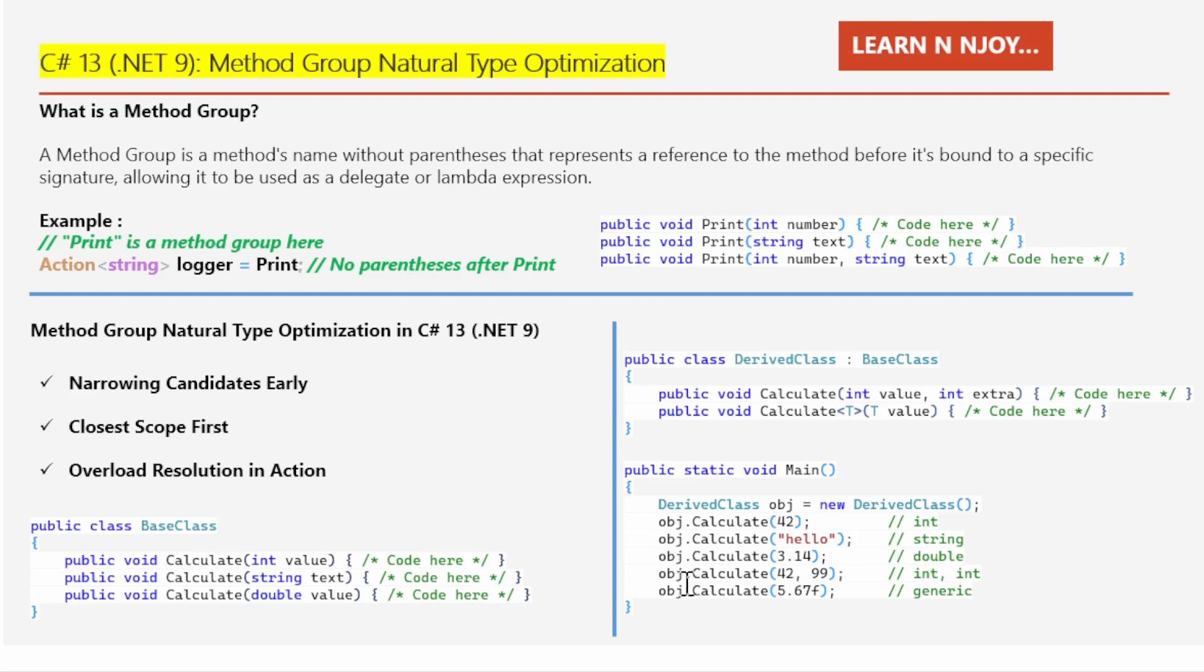Fourth one, if you see obj.calculate(42, 99), here I'm passing two integer arguments in this calculate method. The compiler checks in the derived class and it finds it in the derived class right away. If you see this first calculate method, calculate(int value, int extra), it finds this method. So it's going to use it without looking at the base class.